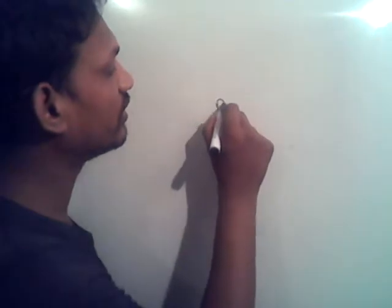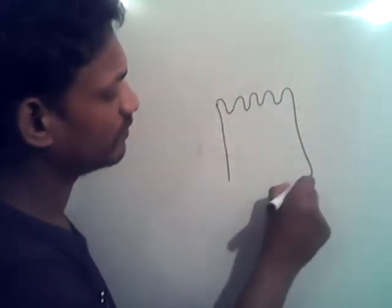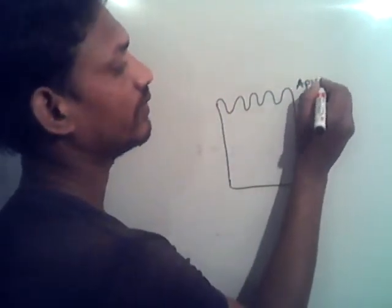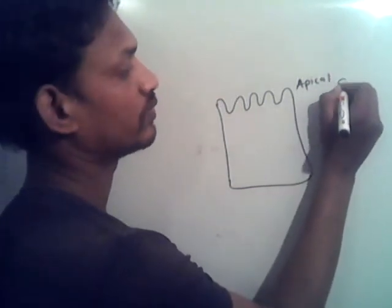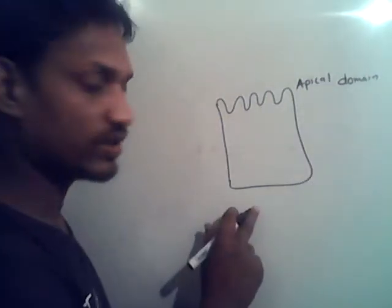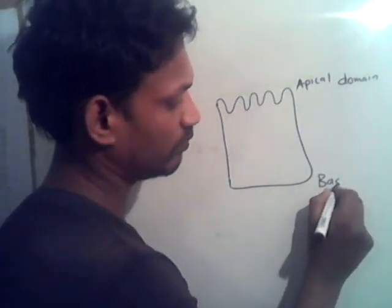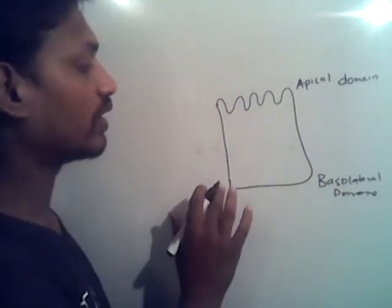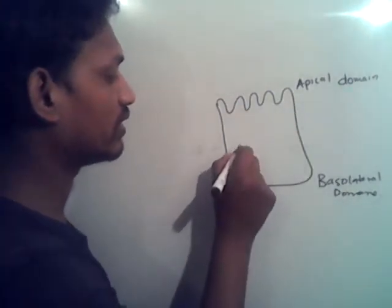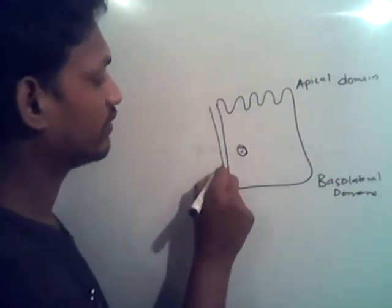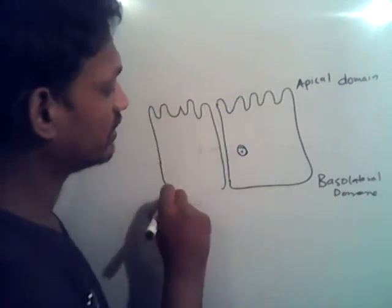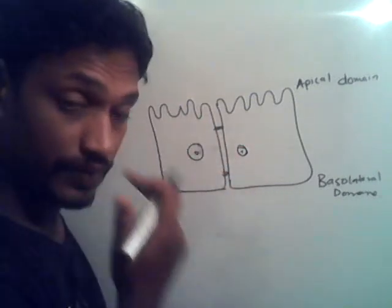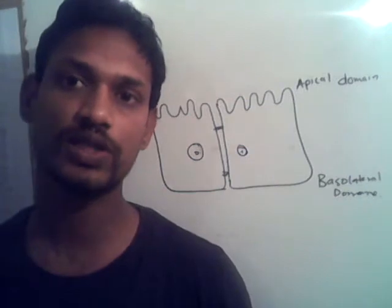This is an epithelial cell. This is an apical domain and this is a basolateral domain. Here is the tight junction. We are looking at how the transport across the epithelial cell takes place.